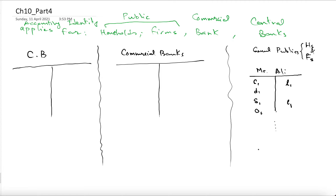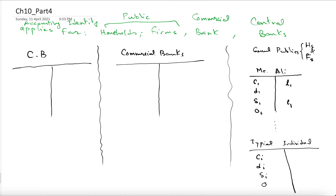We can generalize to a typical individual, using the same notation: CI for cash, DI for deposits, SI for savings, and OI for other assets. On the liability side, liability I, and equity I. We can ask them to show us their balance sheet at a certain point.